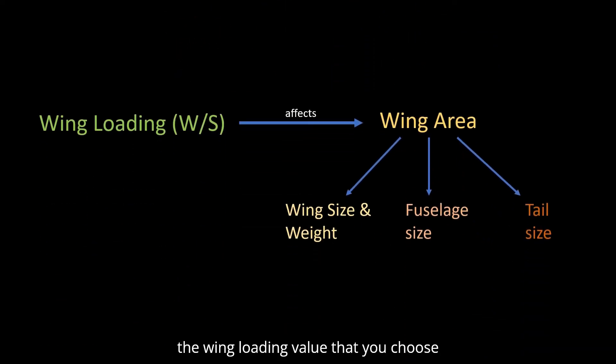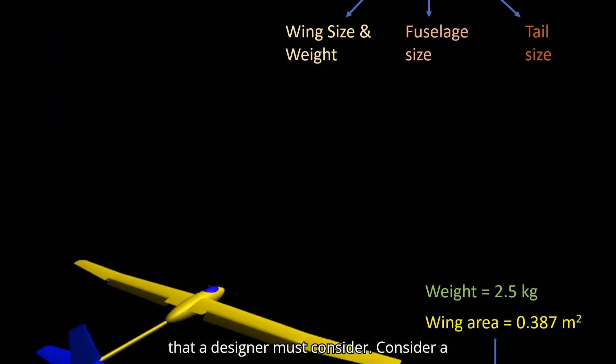For example, the wing loading value that you choose will affect the size and weight of your design's wing, and thus other components such as the fuselage size, tail size, and the structural weight will be affected. This brings us to the trade-off that a designer must consider.